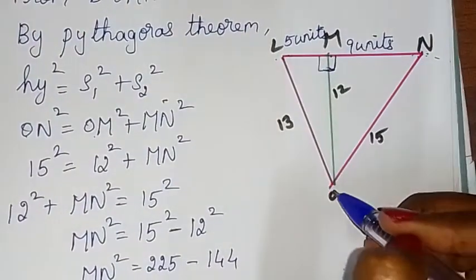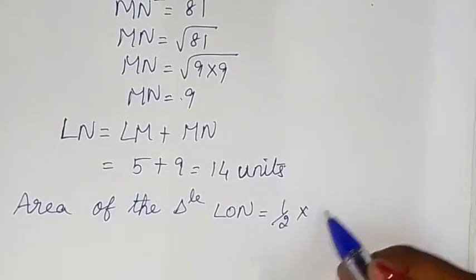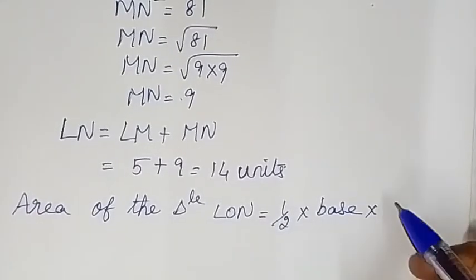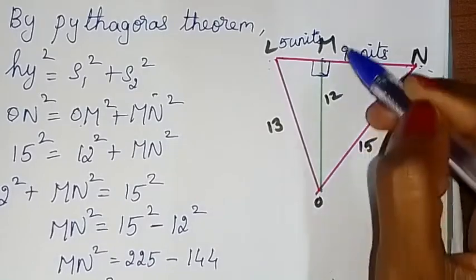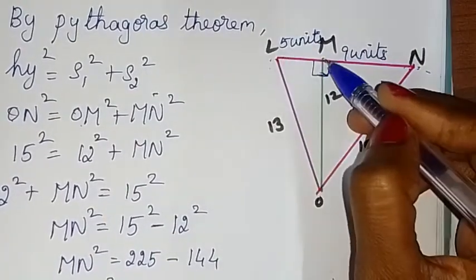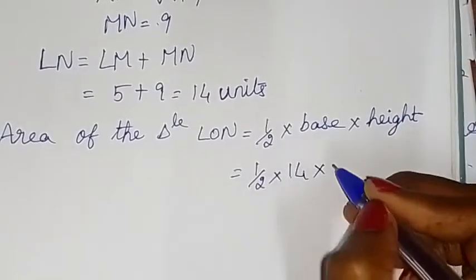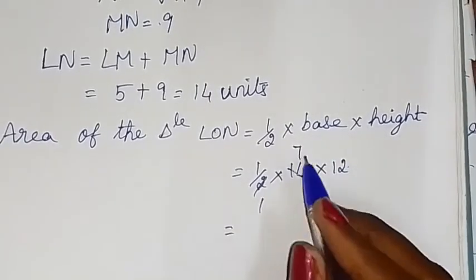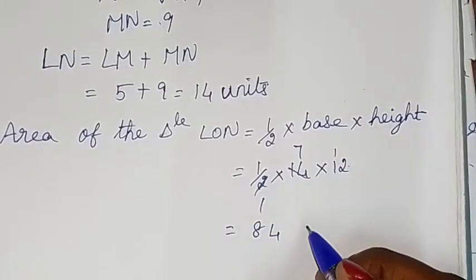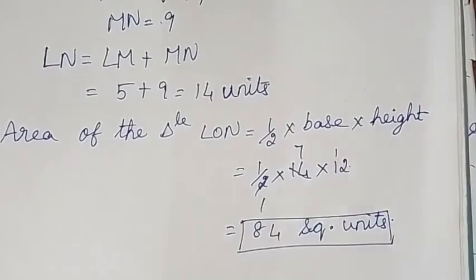Now we find the area of triangle LON. Area of triangle LON equals half times base times height. The base is LN, which equals 14 units, and the height is OM, which equals 12 units. So the area equals half times 14 times 12. Half of 12 is 6, and 6 times 14 equals 84 square units. Thanks for watching, children.